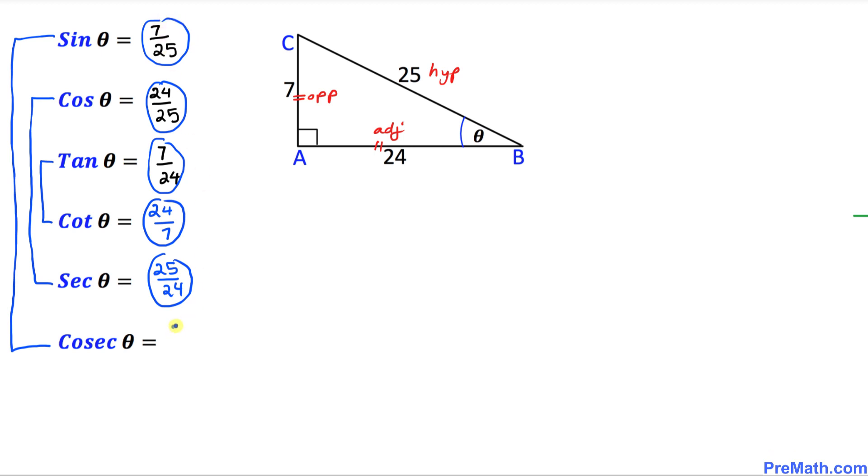So that means 25 over 7 is our cosecant theta. And these trig ratios are the backbone to trigonometry. Just keep practicing and you will perfect it.